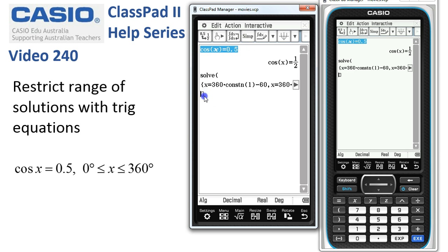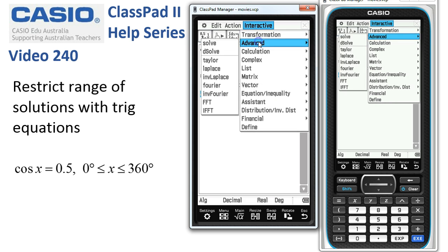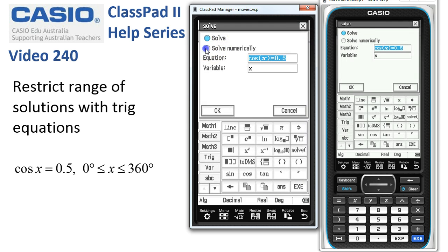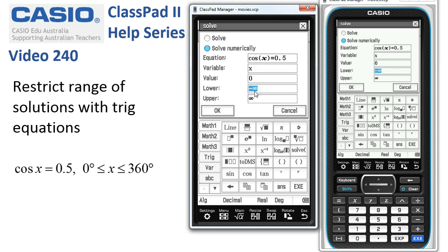Let's take a copy of the equation down and use the interactive advanced solve. Choose the solve numerically switch and say that we want solutions between 0 and 360. Now when I tap OK...